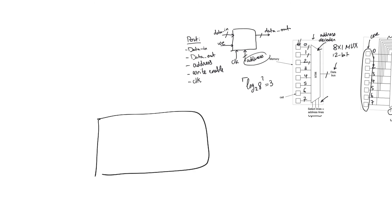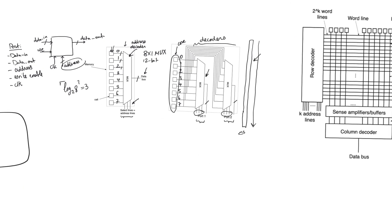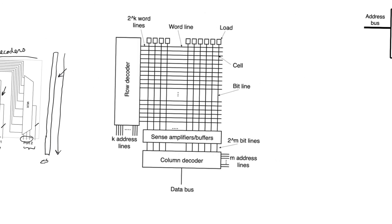When you have a chip with a floor plan and need to place different modules in different locations, a memory with an extreme aspect ratio is impossible to accommodate without making the chip larger and more expensive for no reason. Therefore, practical memories use square arrays instead of linear arrays. We have an array of wires running vertically and horizontally — the vertical wires are called bit lines and the horizontal wires are called word lines.